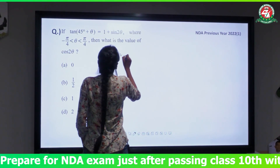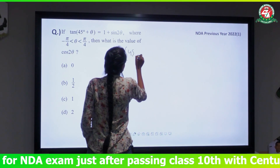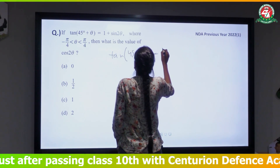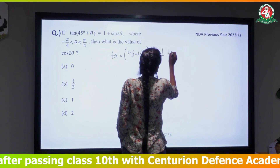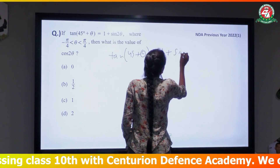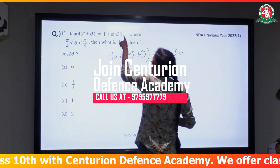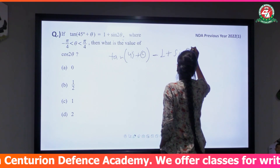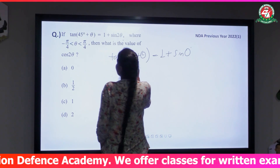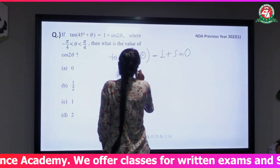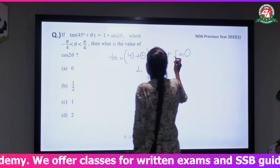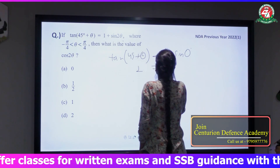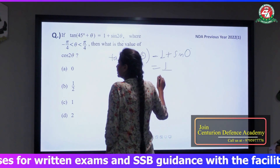So cos(45° + θ) = 1 + sin2θ. If we put θ = 0, then it will be sin 0°. This value is 1 on the left and 0 on the right — our value of cos equals 1. This means LHS equals RHS.